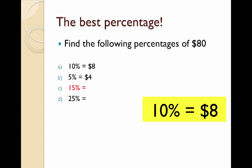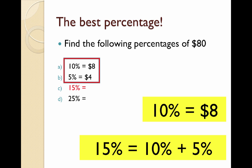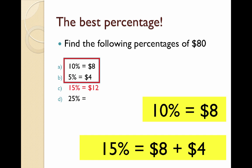What if I wanted to find 15%? Well, 15% is 10% plus 5%, so if I add $8 and $4 together, I get $12. See how I can find other percentages of $80, or any number for that matter, as long as I know what 10% is?